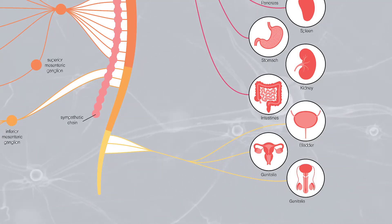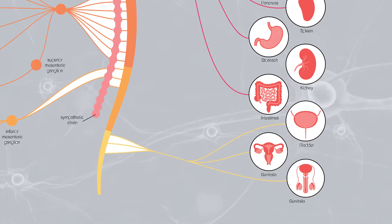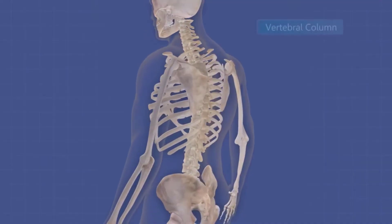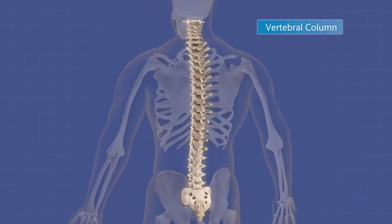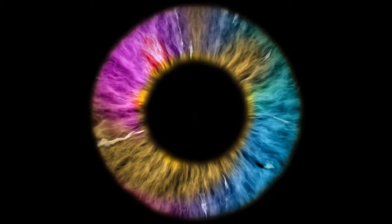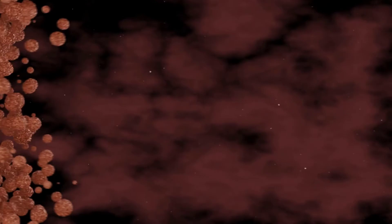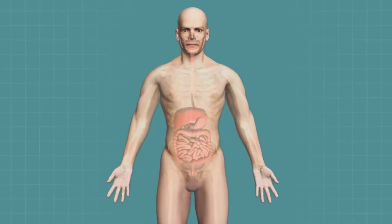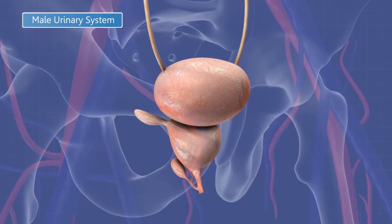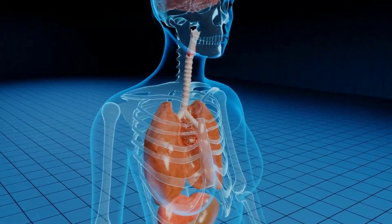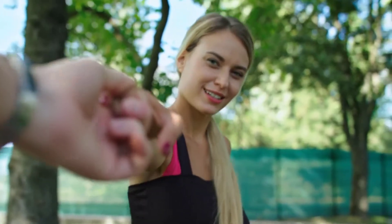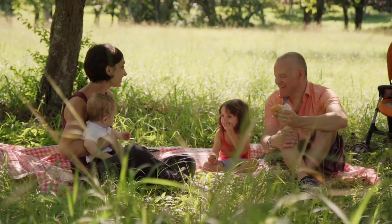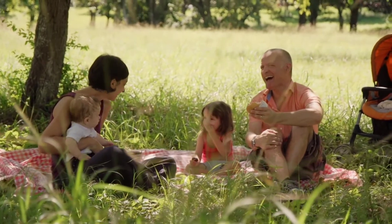The pelvic nerves innervate intramural ganglia in the kidney, bladder, and latter parts of the large intestine and sex organs. The effects produced by the parasympathetic division include pupillary constriction, digestive gland secretion, hormone secretion for nutrient absorption, an increase in digestive tract activity, defecation activities, urination activities, respiratory passageway constriction, a reduced heart rate, and sexual arousal. These general functions center upon relaxation, food processing, and energy absorption.